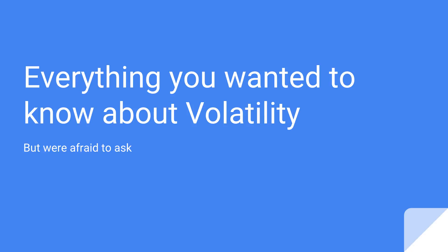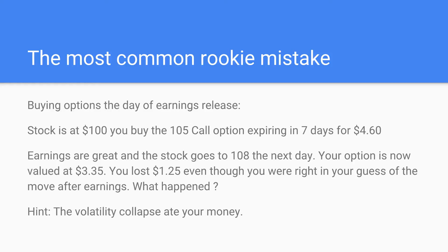To illustrate the importance of volatility in the options world, I'm going to start with the most common rookie mistake. Be honest — we have all made this mistake. Here's the scenario: today is the earnings release for a certain company after the closing bell. I'm sure the stock will go up, so I want to play the earnings with options because options are cheaper than buying shares. I buy the 105 call option expiring in one week for $4.60, with the stock trading at $100.